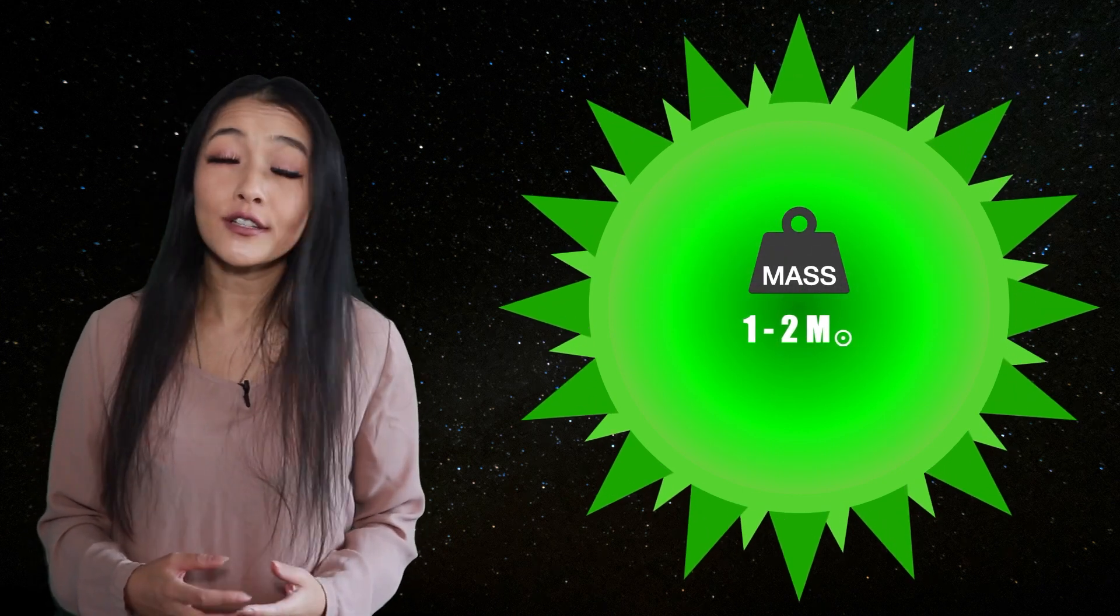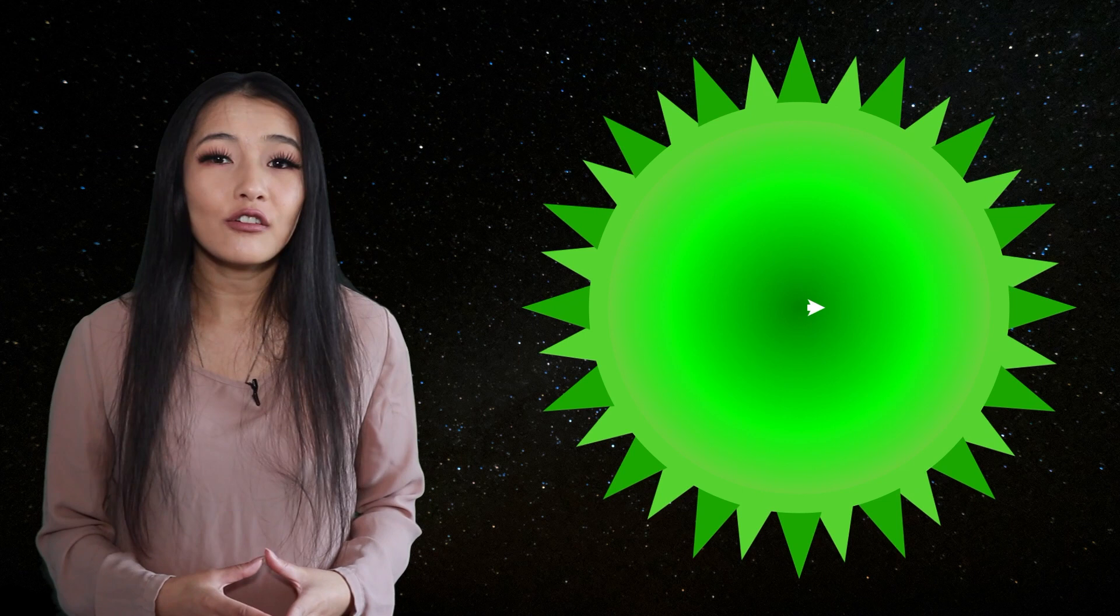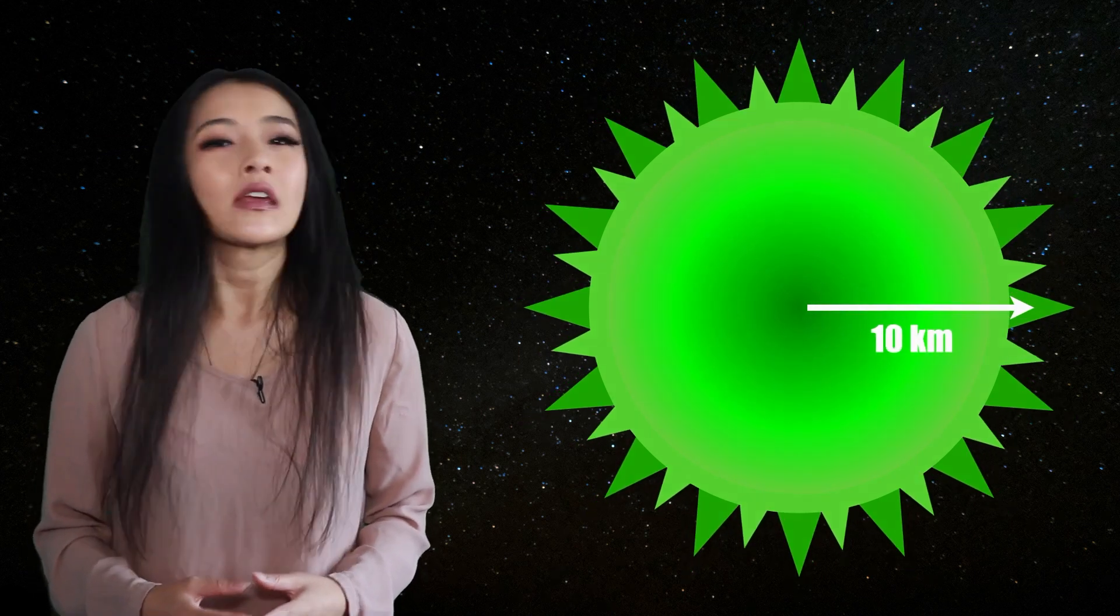When modeling strange stars, scientists found that they could also have a typical stellar mass of one to two solar masses and a radius of about 10 kilometers. But in order for strange matter to form, you need immensely high pressure environments in order to dissolve the atoms and subatomic atoms into their quark constituencies.